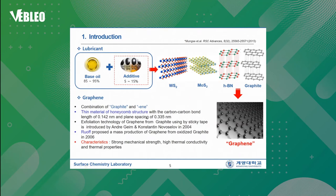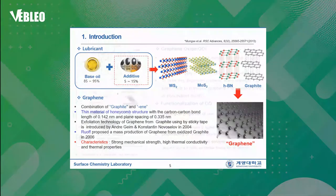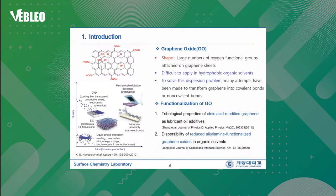Let me talk about graphene a little bit. Graphene is a combination word of graphite and '-ene,' which means double bonds in covalent molecules. Graphene is a material which shows strong mechanical strength, high thermal conductivity, and excellent thermal properties. Graphene oxide has a large number of oxygen functional groups attached on graphene sheets, so it is difficult to apply in hydrophobic organic solvents. In order to solve this dispersion problem, many attempts have been made to transform graphene oxide into covalent or non-covalent bonds — this is the reason why we use functionalization of graphene oxide.